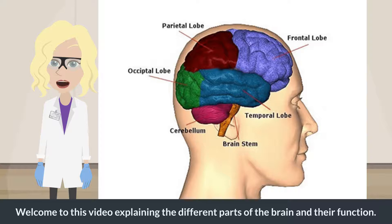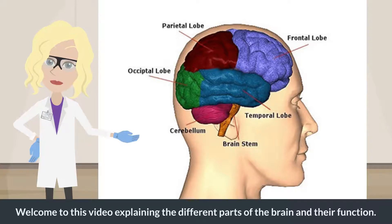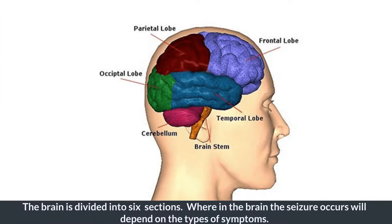Welcome to this video explaining the different parts of the brain and their function. The brain is divided into six sections. Where in the brain a seizure occurs will depend on the types of symptoms.